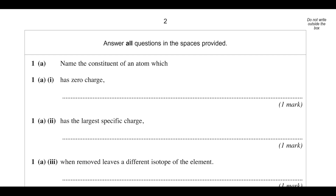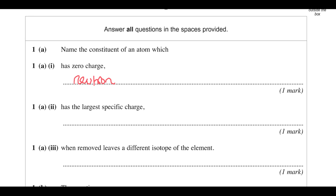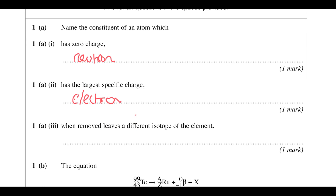Name the constituent of an atom which has zero charge — obviously that's going to be a neutron. Neutrinos aren't part of an atom so they won't be a valid answer. It has a larger specific charge in terms of magnitude, so that's talking about an electron. When removed it leaves a different isotope of an element — that's a neutron.